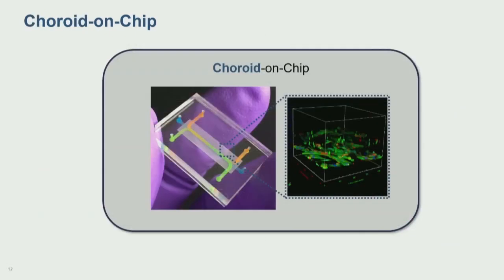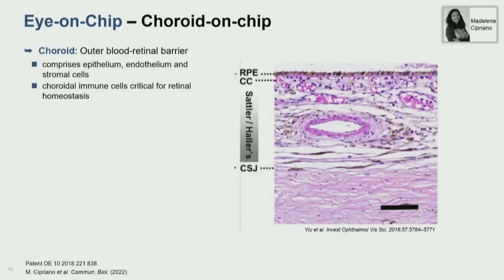Now I'm going to jump directly to our next model: the choroid-on-chip model. This is basically the outer blood-retinal barrier in the eye. We've been working a lot on ophthalmology lately because anti-tumor drugs in particular have a lot of ocular side effects. The choroid comprises an epithelium, endothelium, and stromal cells. The epithelium is a very defined retinal pigment epithelium, the stromal cells are mostly melanocytes, and the choroidal immune cells are critical for retinal homeostasis.